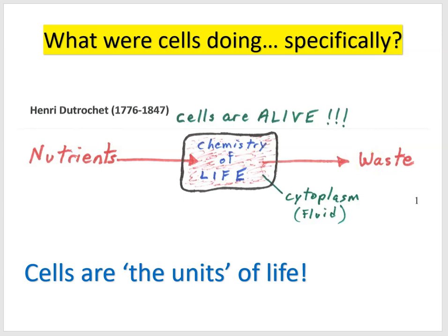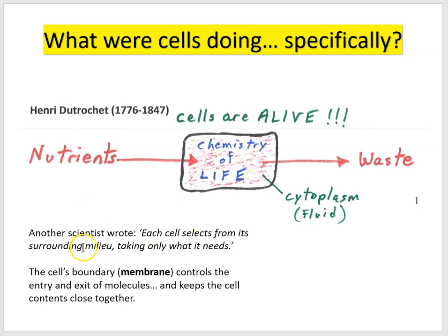Another scientist wrote that each cell selects from its surrounding milieu, taking only what it needs. Scientists began to suspect that the membrane was selectively permeable — it allowed certain materials into the cell but blocked the entry of other things.